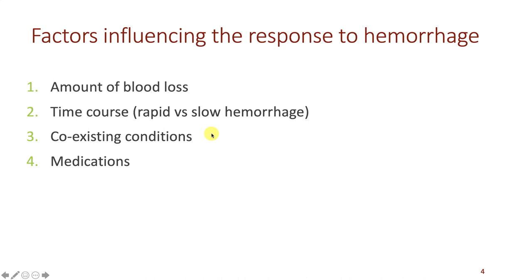Other factors that can influence the response to hemorrhage include co-existing conditions. For example, an elderly, frail person does not have much reserve in terms of autonomic responses, which may be depressed because of comorbidities — so the responses will not be as robust to help offset the loss of blood. Another factor is various medications a patient might be taking, such as cardiovascular drugs that block some of the compensatory responses the body needs to initiate to recover blood pressure, or anesthesia, which would especially affect autonomic function and responses to blood loss.